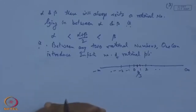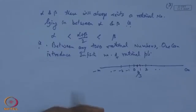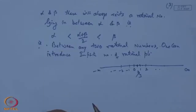The answer is no. There are points lying on this straight line which are not rational points at all. So the set of rational numbers is not complete — we need a further extension of the rational number system.